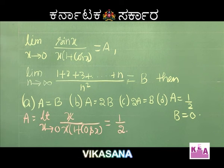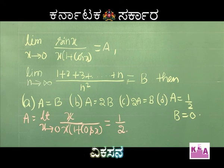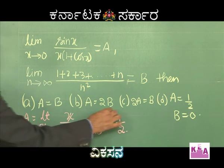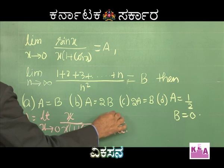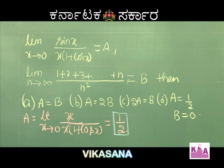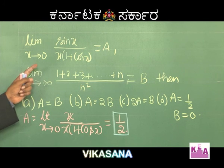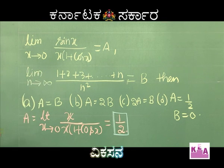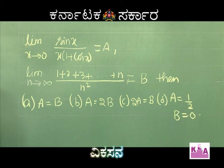So a = 1/2. I hope you've understood this. Now coming to the second part — we got a = 1/2, but we cannot yet conclude the answer. Let me introduce a small concept about limits at infinity.